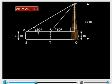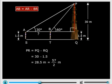So what is PR? PR is PQ minus RQ, that is 30 minus 1.5 or 28.5 meters.